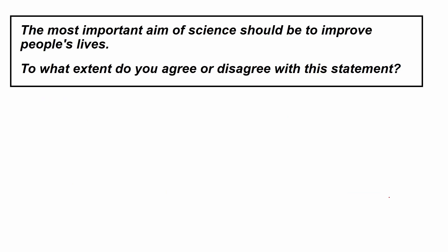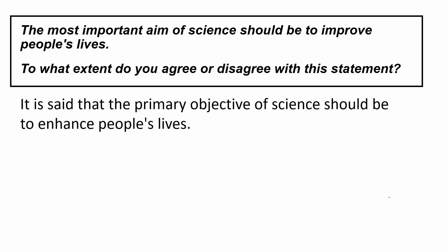The first thing to write is to paraphrase the question. This is my paraphrase: 'It is said that the primary objective of science should be to enhance people's lives.' I added 'it is said that' as a passive construction to introduce the statement. Instead of 'the most important aim,' I used 'the primary objective of.' And instead of 'improve,' I used 'enhance.' The rest is quite the same.